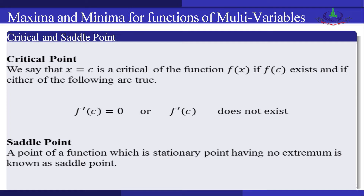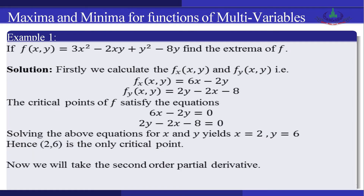Dear students, now we see an example. If f(x, y) = 3x² − 2xy + y² − 8y, find the extremum of f(x, y). First we calculate the partial derivatives: f_x = 6x − 2y, and f_y = 2y − 2x − 8.